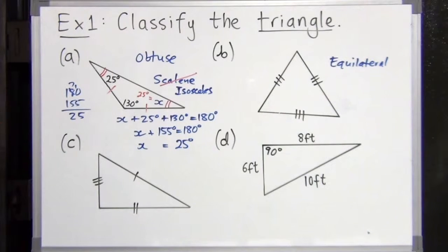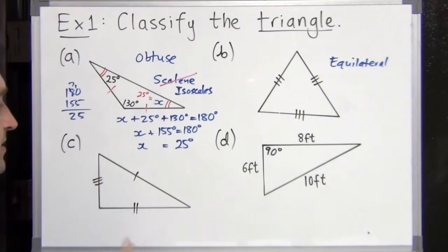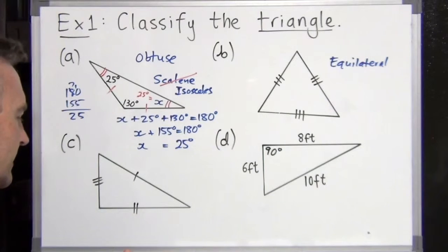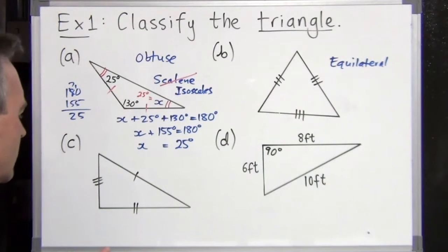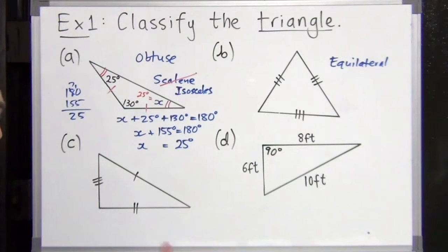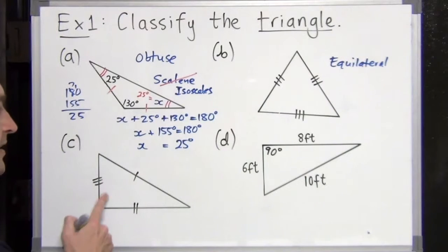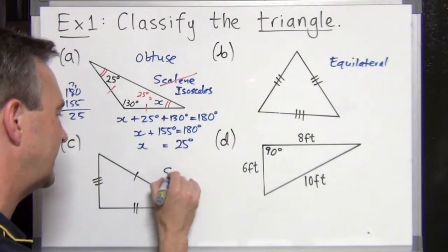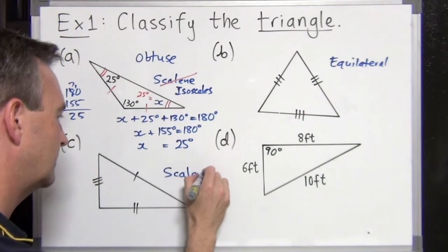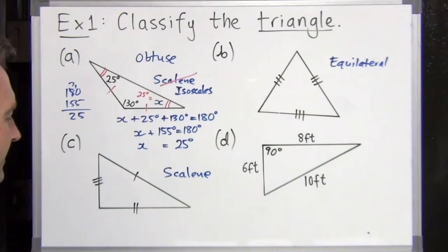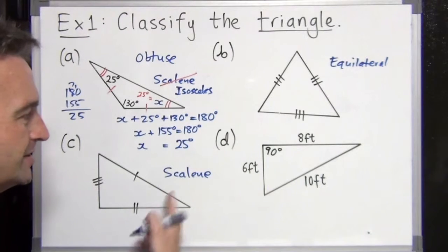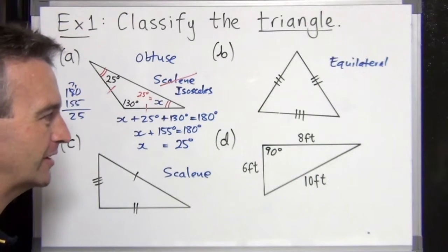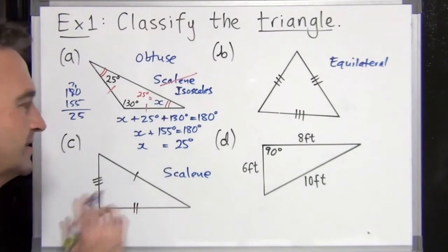Looking at part c, we have a triangle with three different side lengths, so this is definitely scalene. It looks like there might be a right angle, but we're not given that information — we can't say it's a right angle just because it looks like one. We can't assume it. And since we don't know this angle, we don't know if it's acute or obtuse either. So scalene is all we can say.